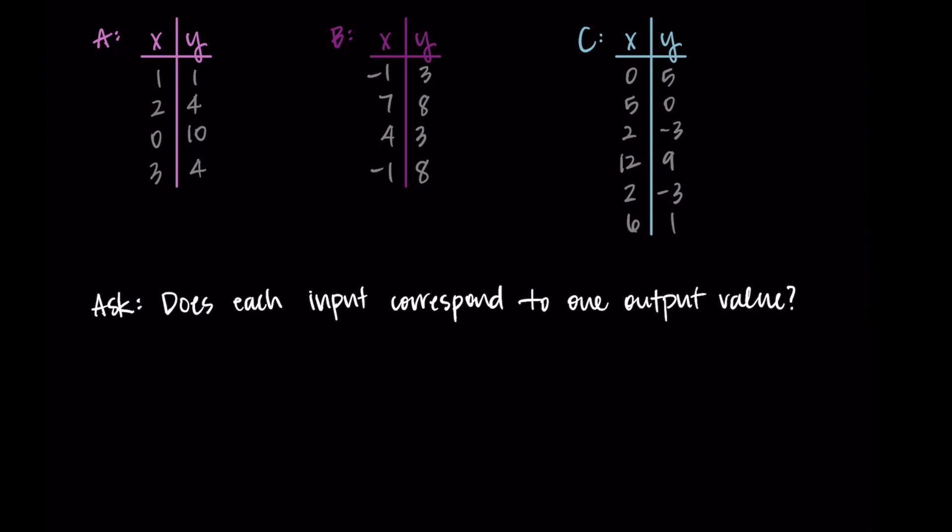Starting with relation A, if we look at the input column, all our inputs show up only once. This means this is a function - each input corresponds to only one output since each input shows up once. You might notice that the output of 4 shows up twice, but this is fine. We don't mind that the output shows up twice; what we're looking for is does each input correspond to only one output.